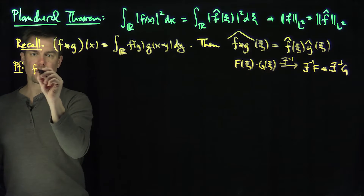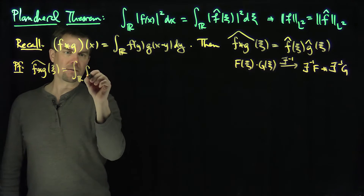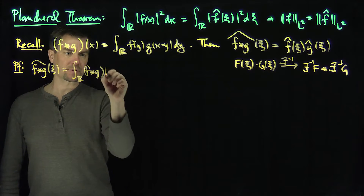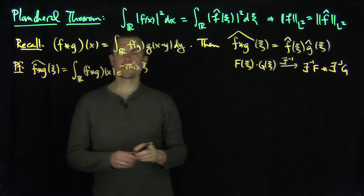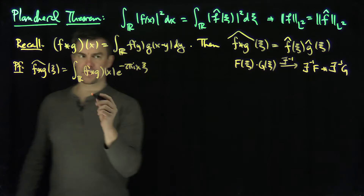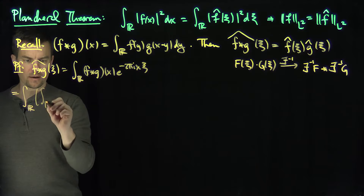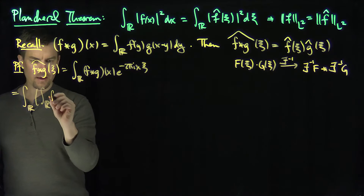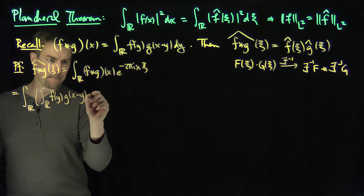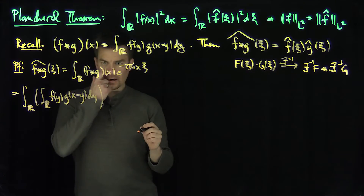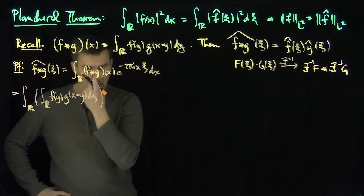The proof of this is relatively straightforward. If I take the Fourier transform of f*g evaluated at ξ, this is the integral over ℝ of (f*g)(x) times e^{−2πi x·ξ} dx. Feeding in the definition of convolution, this becomes the integral over ℝ of the integral over ℝ of f(y)·g(x−y) dy, times e^{−2πi x·ξ} dx.